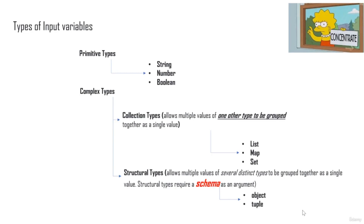There are three primitive input variable types: string, number, and boolean. Complex types include collection types — list, map, and set — used when you want multiple values of another type grouped as a single value. Structural types, which include object and tuple, allow multiple values of several distinct types to be grouped together. An important distinction: structural types require a schema, while collection types do not.